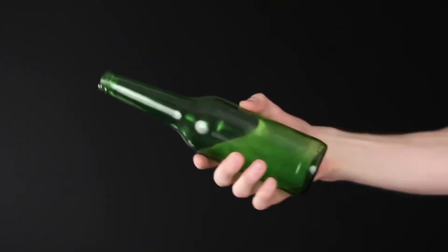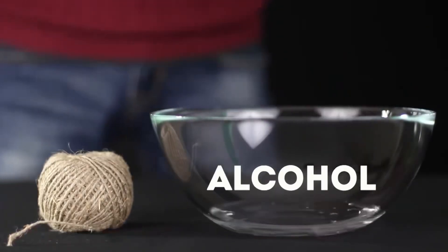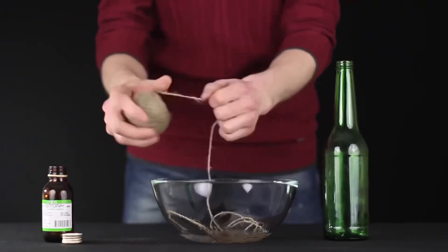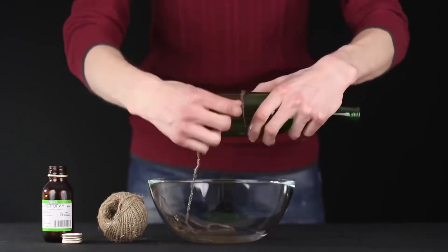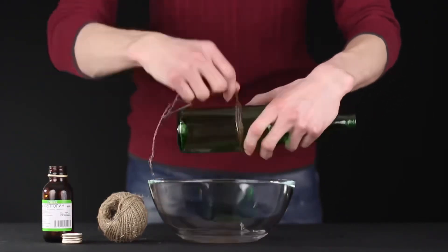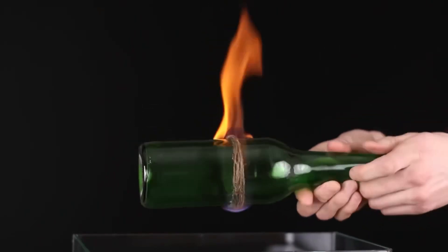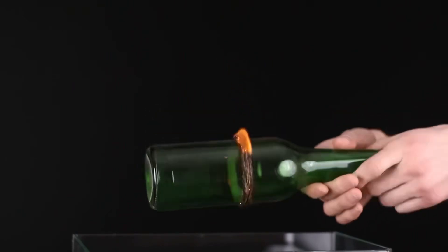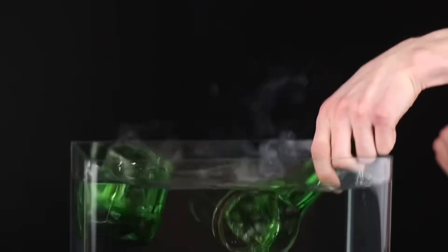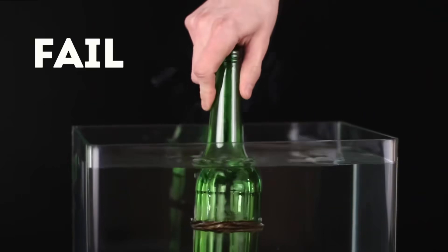Let's take an ordinary glass bottle. Pour alcohol into a bowl and dip a ball of twine into it. Soak it well and wrap it around the center of the bottle. We set it on fire and begin to turn the bottle smoothly while the fire is burning. As soon as it goes out, we drop the bottle to the water with a sharp movement and it divides into three parts.